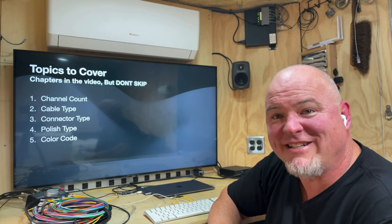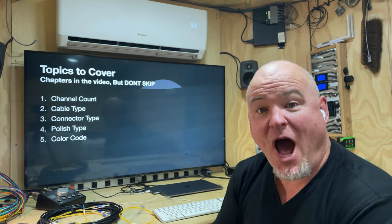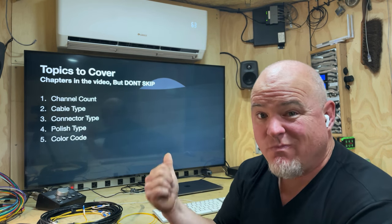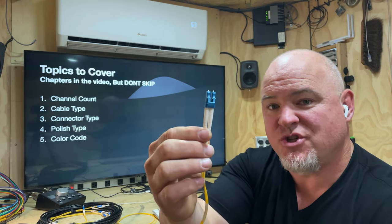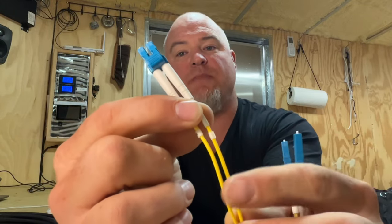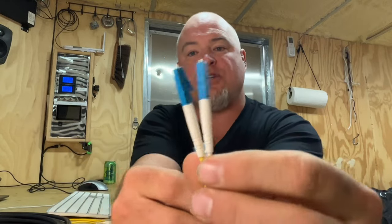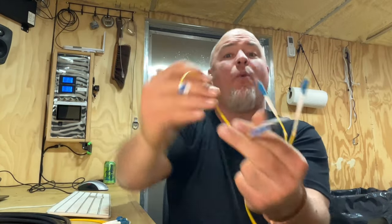The first thing I want to talk about when classifying fiber optics is channel count — how many fibers are we talking about? The answer has nothing to do with the word 'mode.' This is a duplex jumper: it has two fiber connectors, two fibers in the assembly, two pieces of glass, two individual connectors. This is a simplex jumper: there is one fiber involved. We're literally talking about how many fibers are involved.